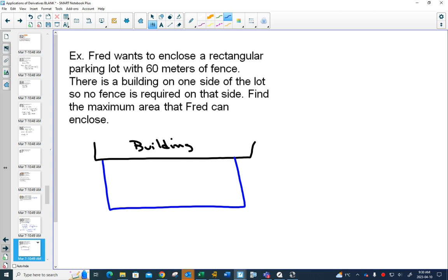So here is my building, and I'm going to enclose the parking lot with fence. But you don't need the fence on the side of the building. Find the maximum area that Fred can enclose, and he has 60 meters of fence in total. So we want to find a maximum area, so we're going to want to write an equation that is area equals.